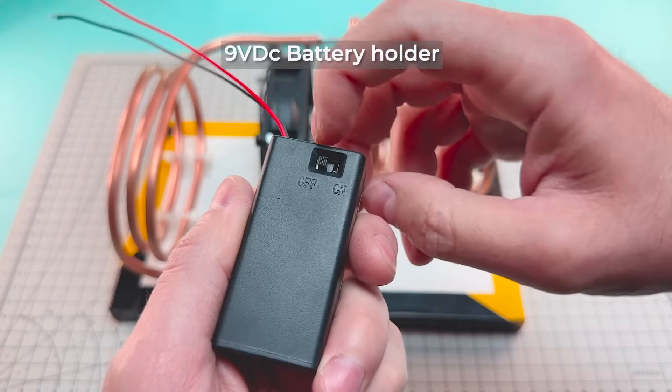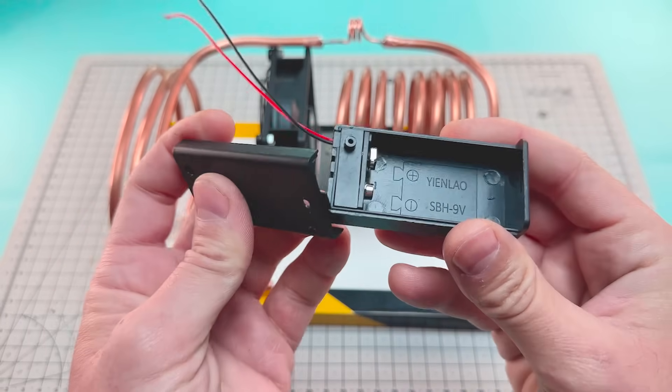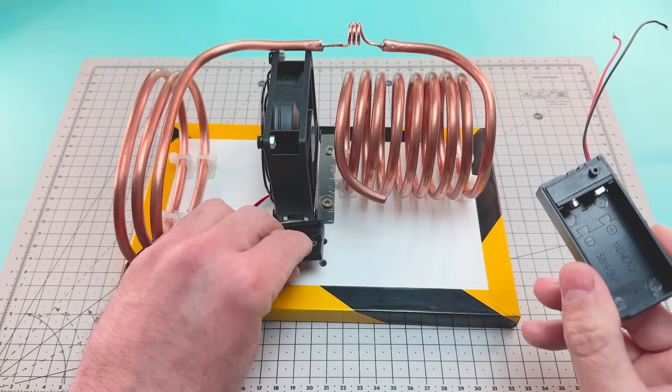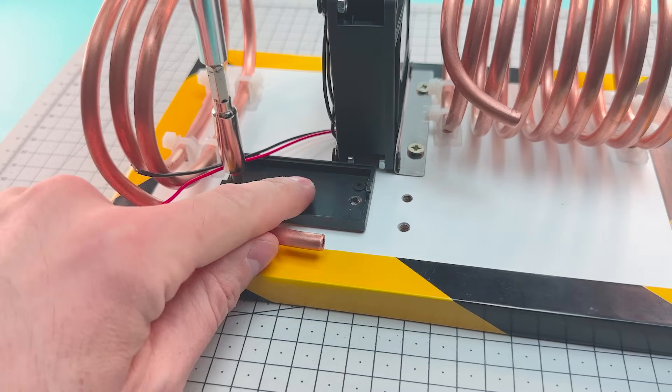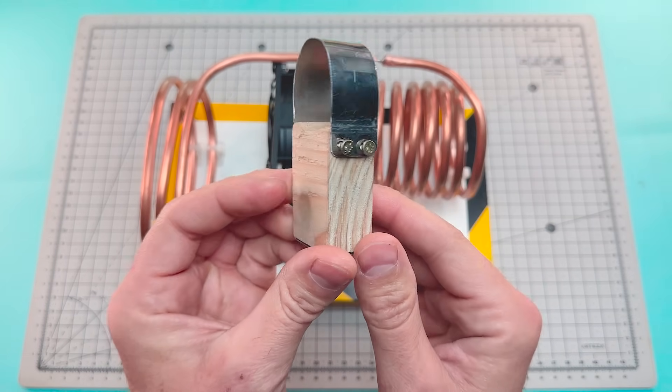Now we're going to install a small battery holder. And next to this holder, another one that will support an air pump.